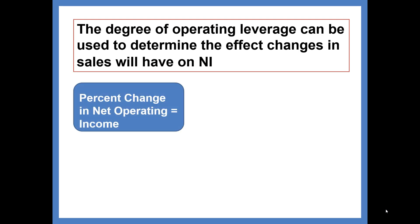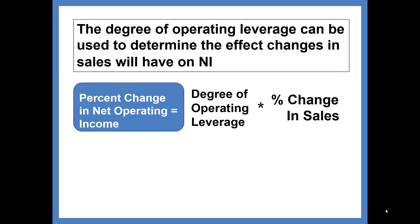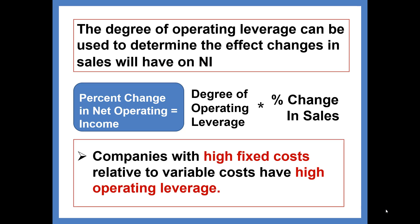The percentage change in income can be determined by taking the degree of operating leverage and multiplying by the percentage change in sales. Note that companies with high fixed costs relative to variable costs will have high operating leverage.